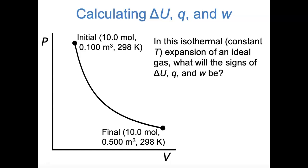If it's an isothermal process—temperature stays constant—and for an ideal gas, U depends only on temperature, then ΔU must always be zero. There's never a change in internal energy if the temperature doesn't change. We've also already seen that for any expansion of a gas, W is going to be negative—that's our sign convention. So we can figure out Q from the first law: if ΔU = Q + W, and ΔU is zero and W is negative, then Q has to be positive.